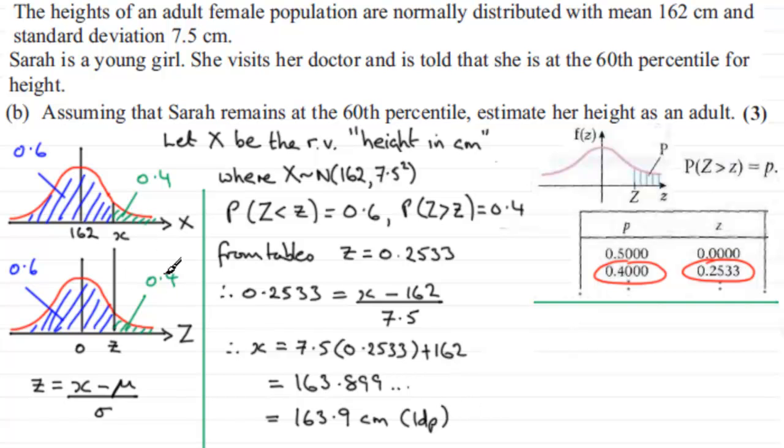Having a sketch also gives us an advantage because we can check to see that our observed value, we're expecting to see that it's more than 162. So you can see this value has come out at more than 162.